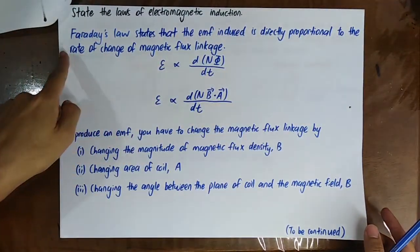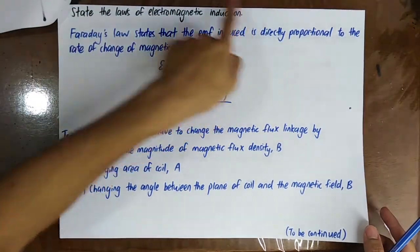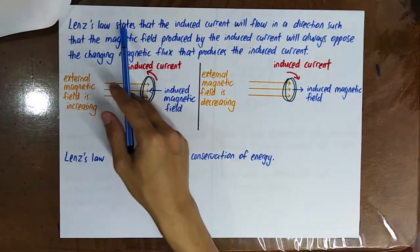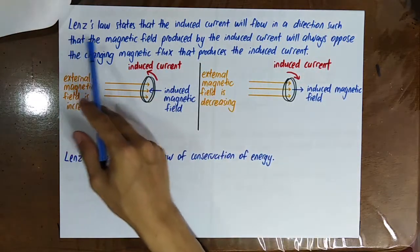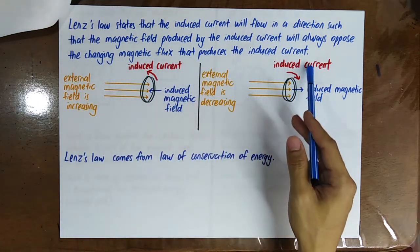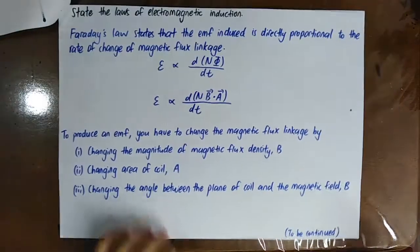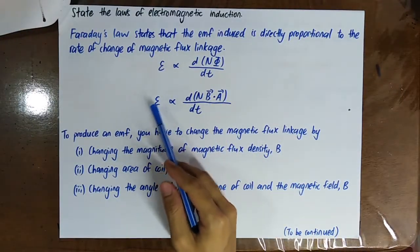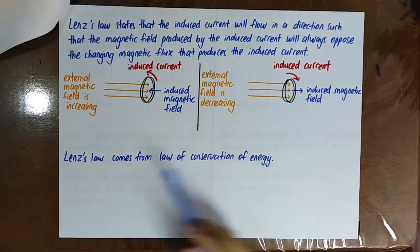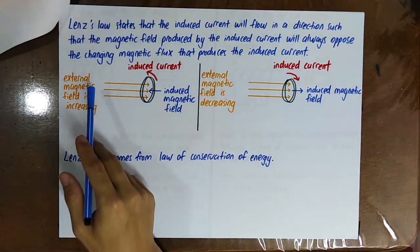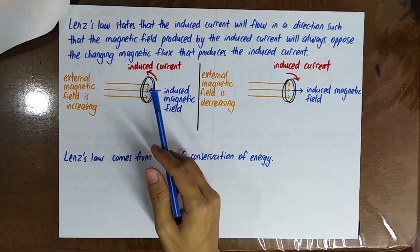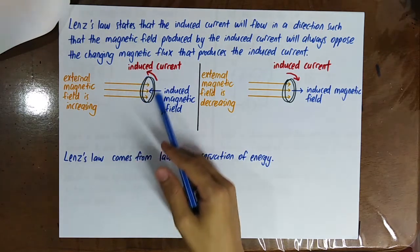Now we also need to state the definition of Lenz's law. Lenz's law states that the induced current will flow in a direction such that the magnetic field produced by the induced current will always oppose the changing magnetic flux that produces it. The induced EMF causes the induced current.